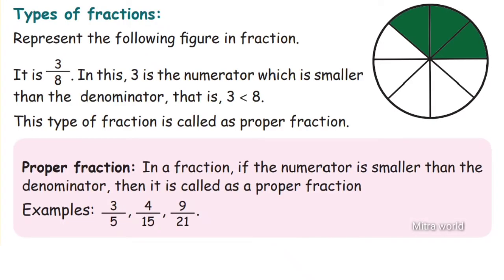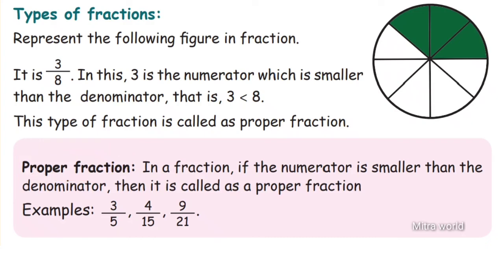Now we are going to see the types of fractions. Looking at a figure with fraction 3 by 8: 3 is smaller than 8, meaning the numerator is smaller than the denominator. This type of fraction is called a proper fraction. In a proper fraction, the numerator is smaller than the denominator. Examples: 3 by 5, 4 by 15, 9 by 21.